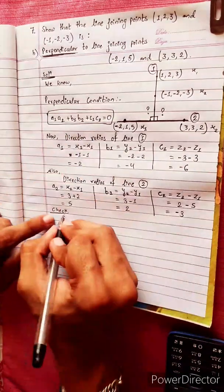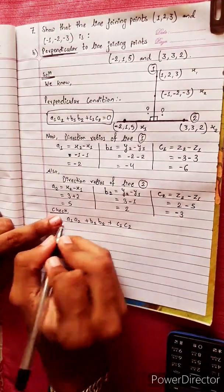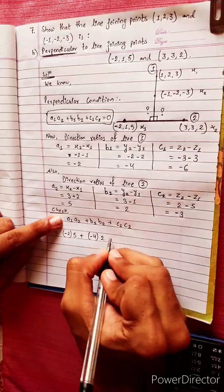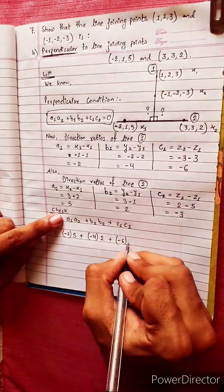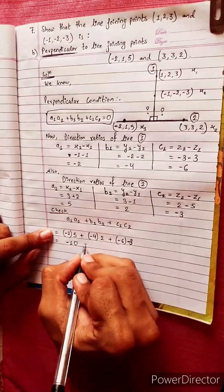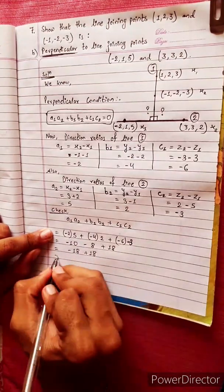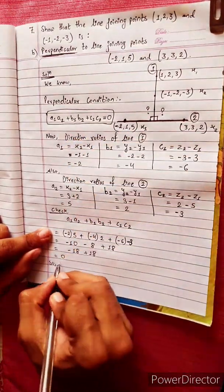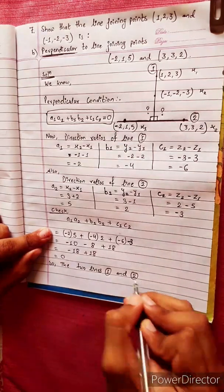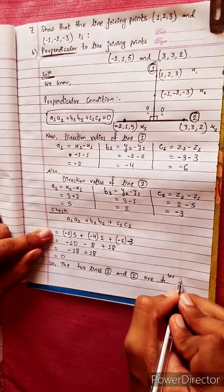Now applying the perpendicular condition: A1·A2 + B1·B2 + C1·C2. A1 is -2, A2 is 5, plus B1 is -4, B2 is 2, plus C1 is -6, C2 is -3. Computing this to check if the lines are perpendicular to each other.